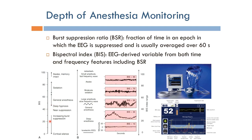Going below the general anesthesia range can be dangerous. A bispectral index of around 10 corresponds to nearly complete EEG suppression, which is very dangerous. When anesthesia is that deep, it is not guaranteed that the patient will be able to recover back to a normal state. It is therefore essential to maintain the BIS within the safe general anesthesia range and correct any downward drift promptly.